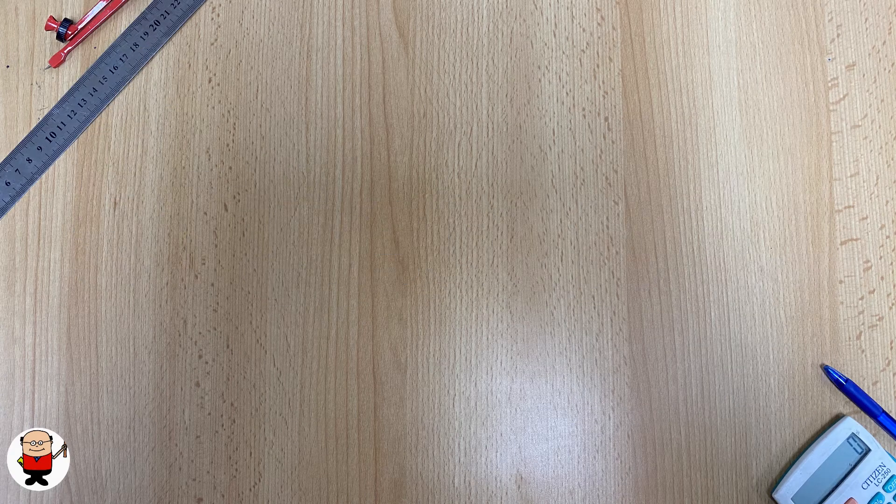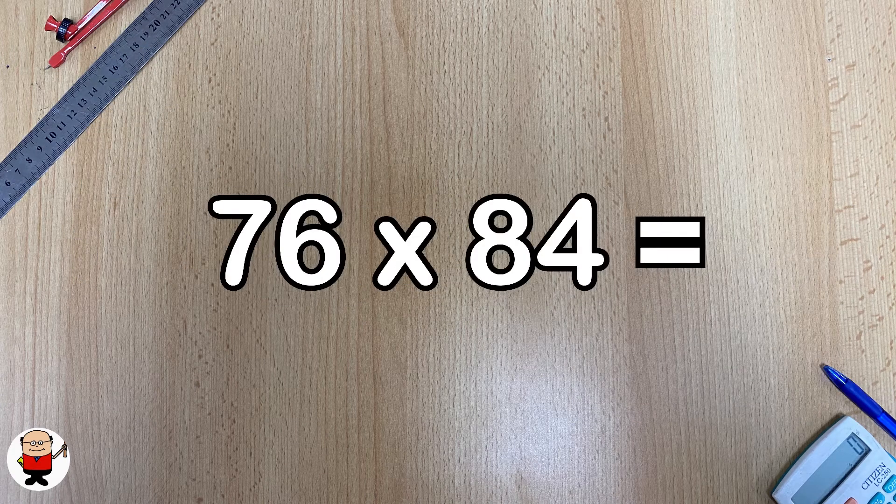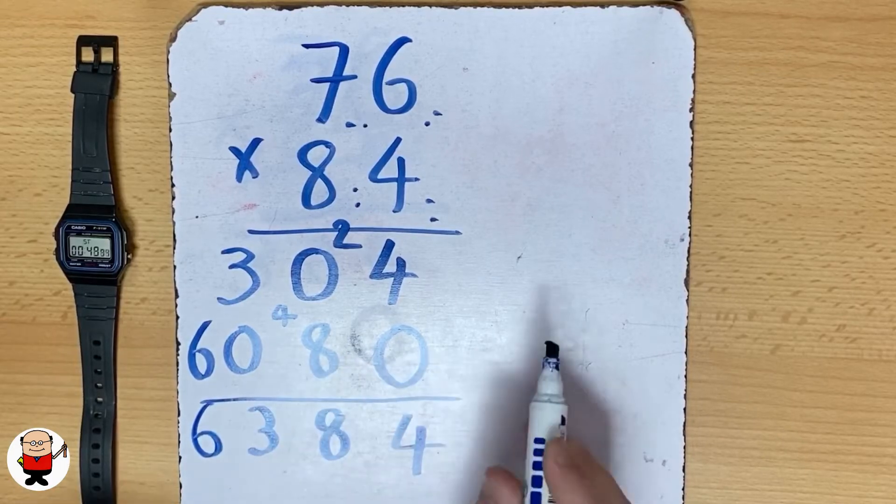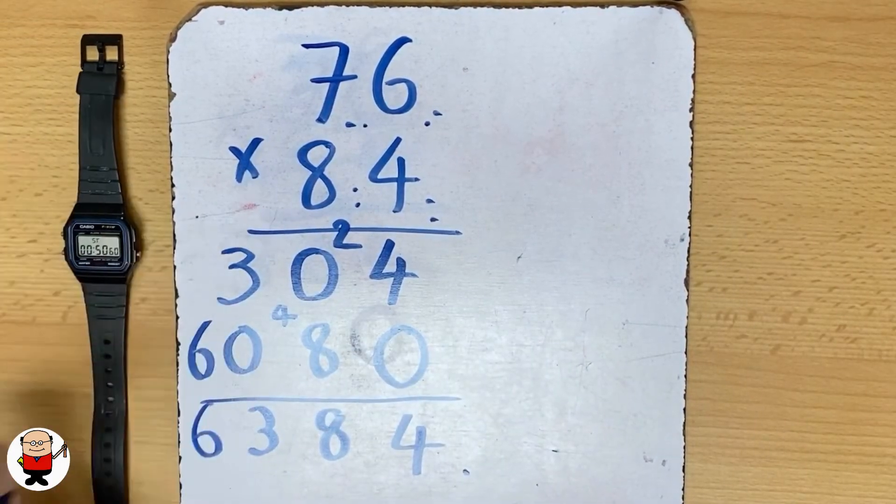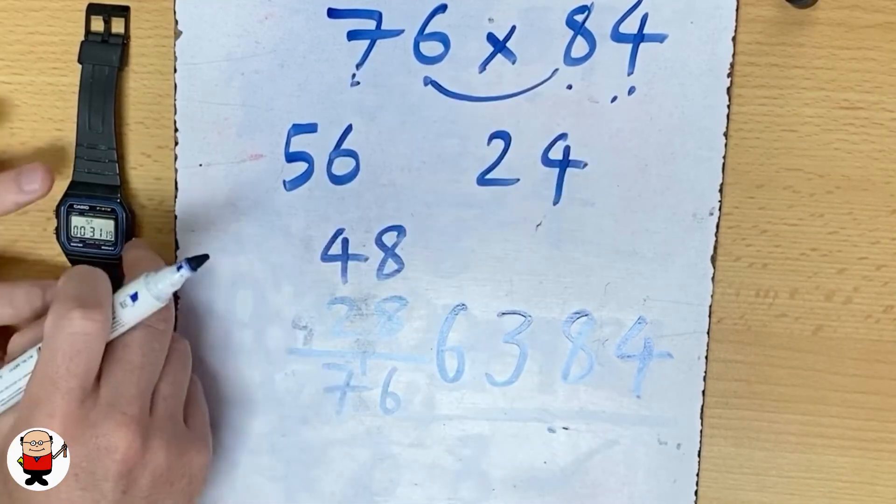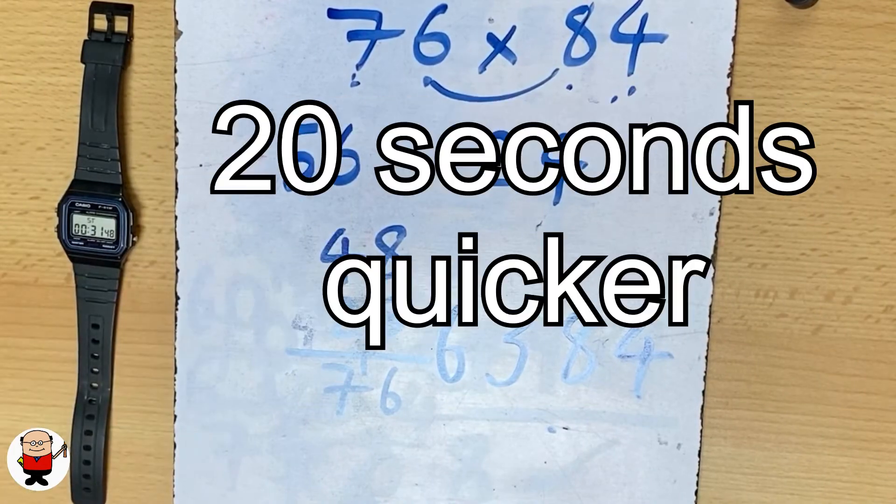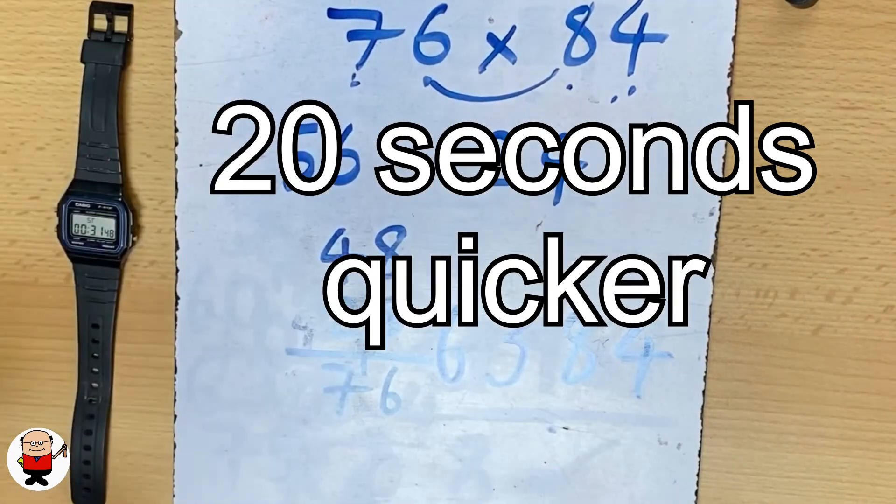It took me 51 seconds to work out the answer of 76 multiplied by 84, but in this video I'm going to show you how you can turn your brain into a calculator and get yourself multiplying much quicker using my method.